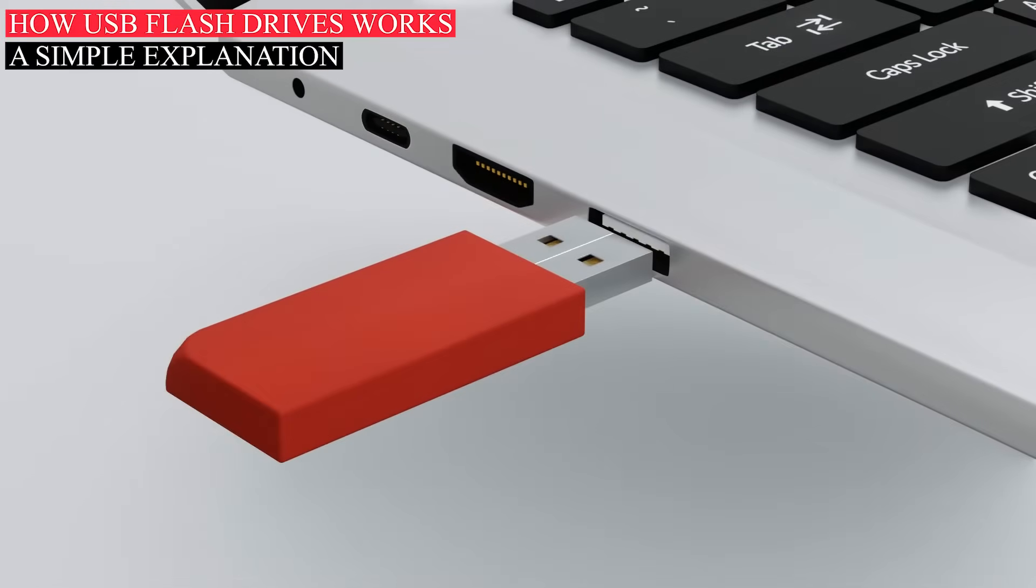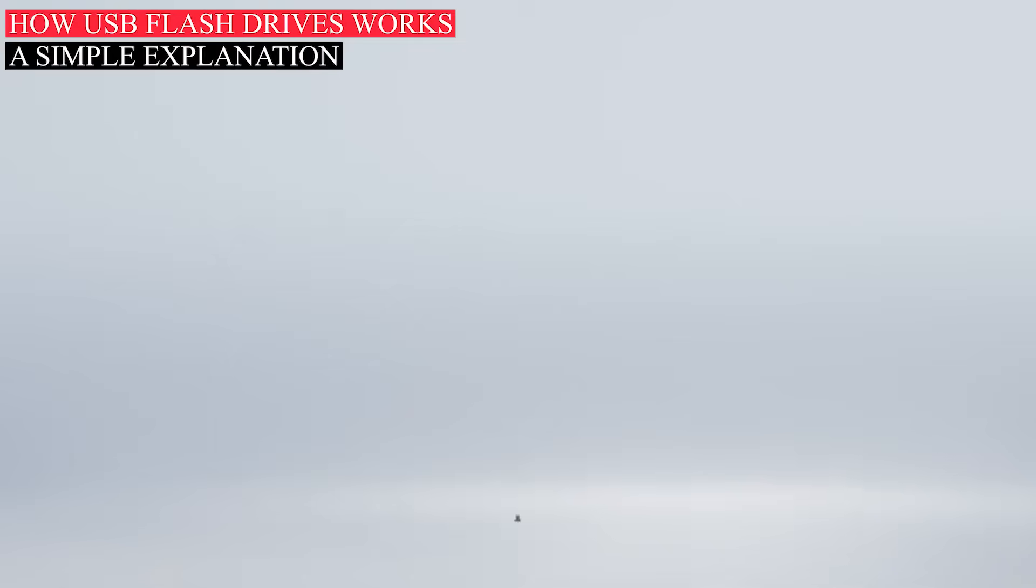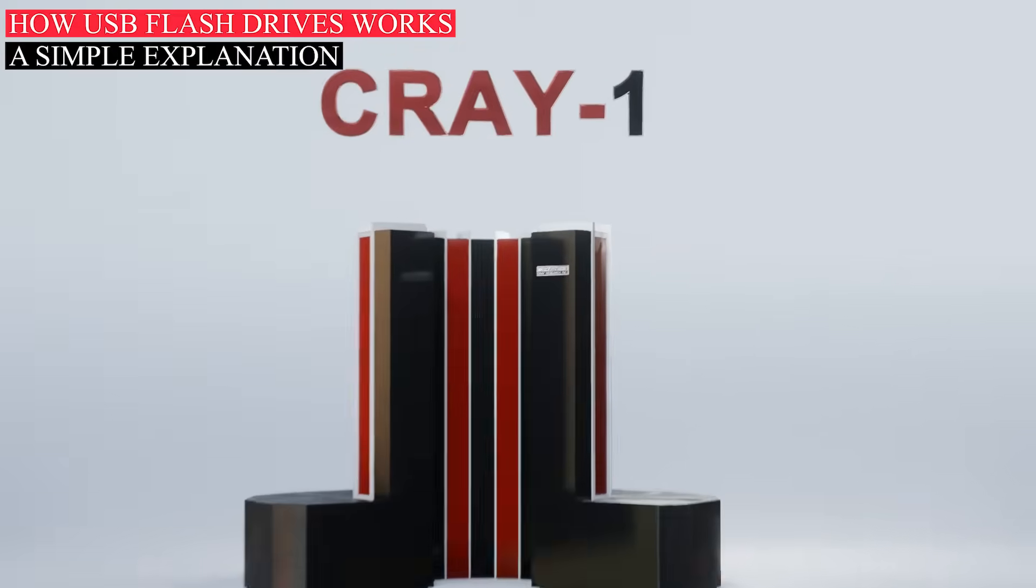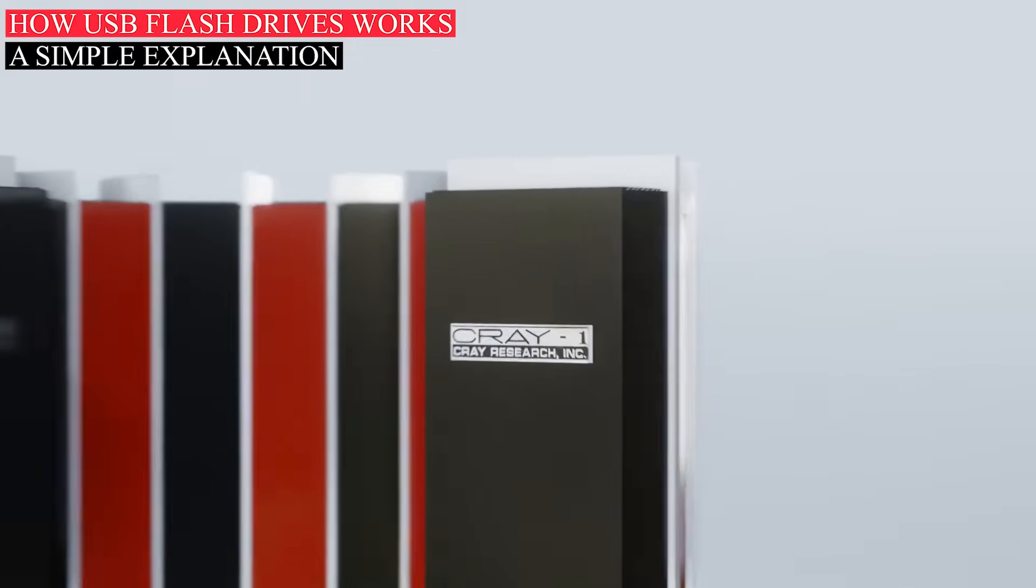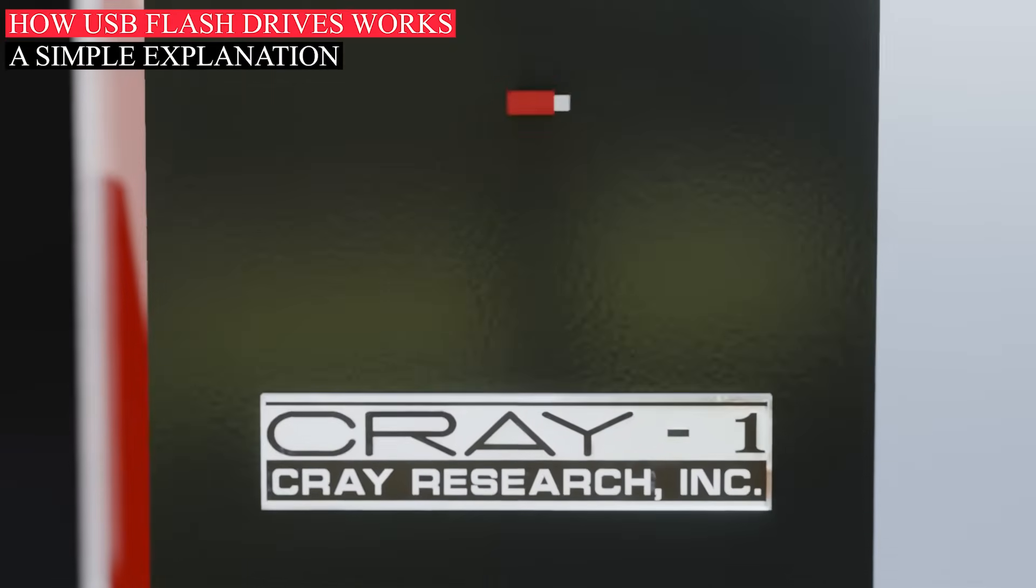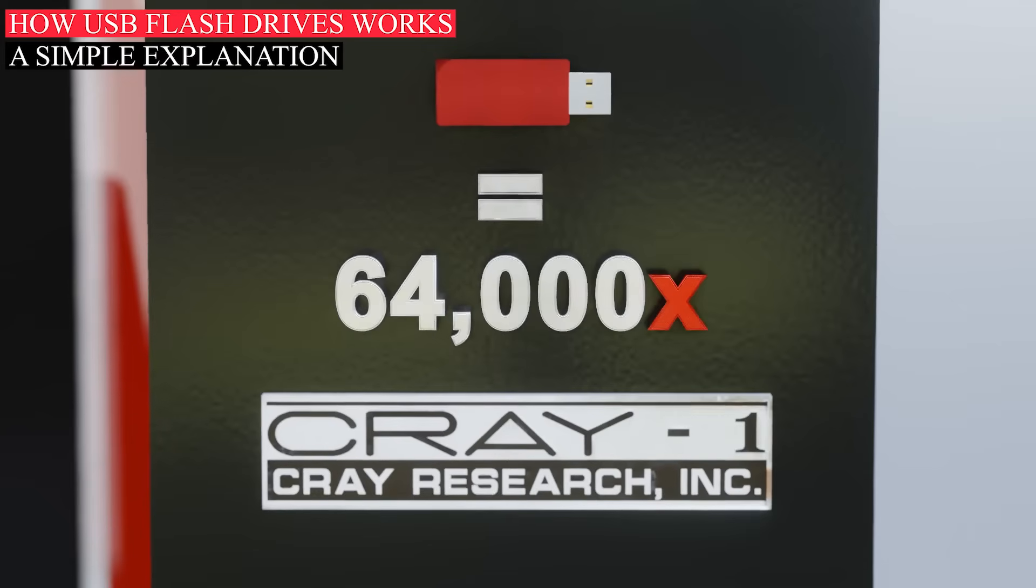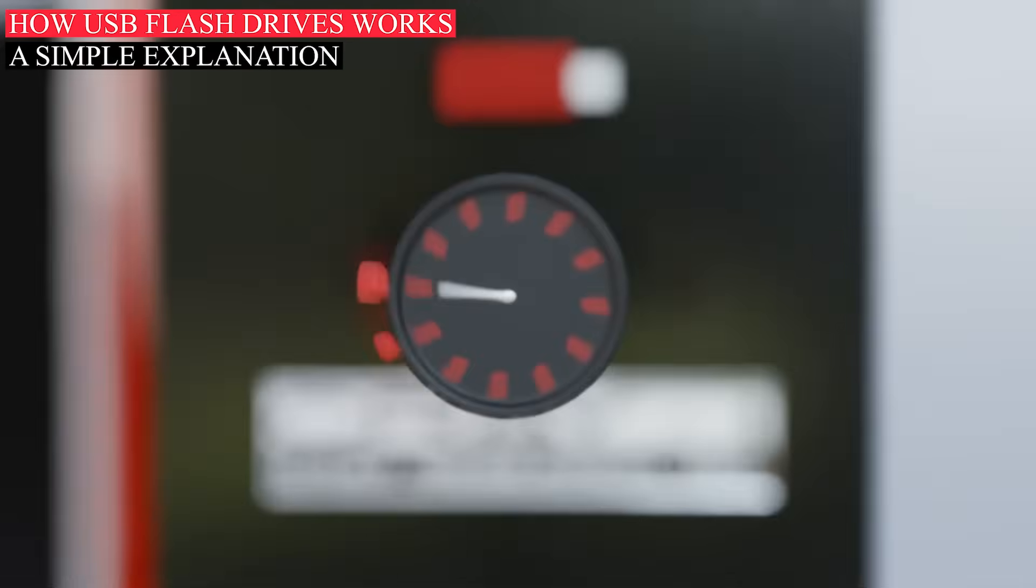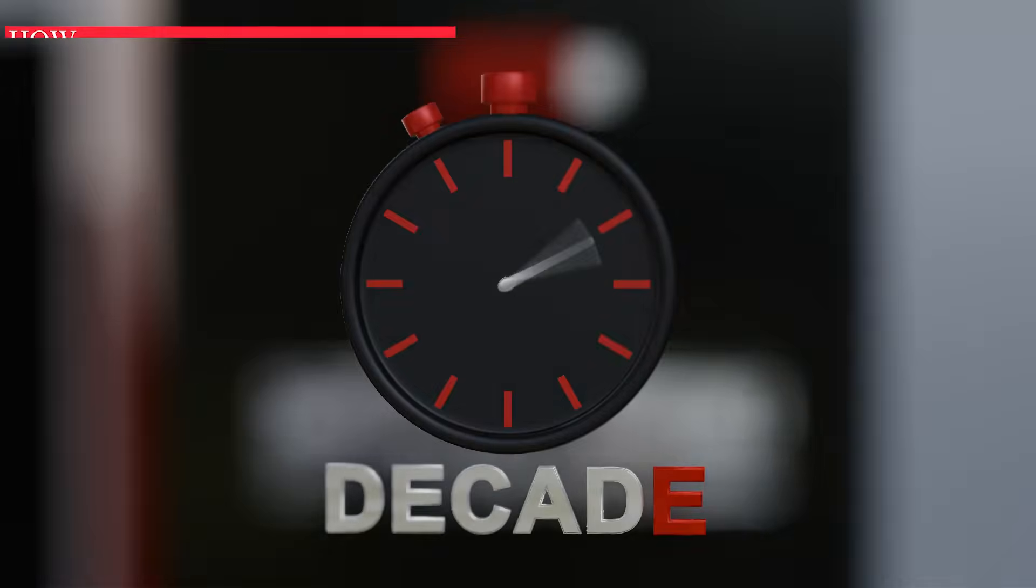Hi and welcome back to the Si Havoye Engineering YouTube channel. The first supercomputer, CrayOne, had a computer storage of 8.39 megabytes and this tiny device can store nearly 64,000 times its data and can store it for a decade without electricity. So how does this work?